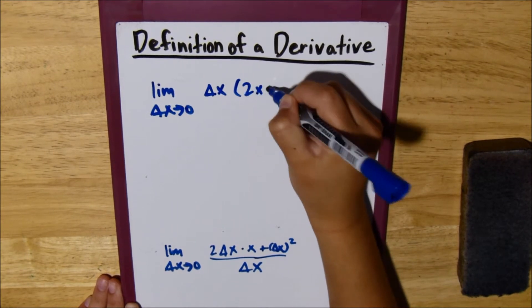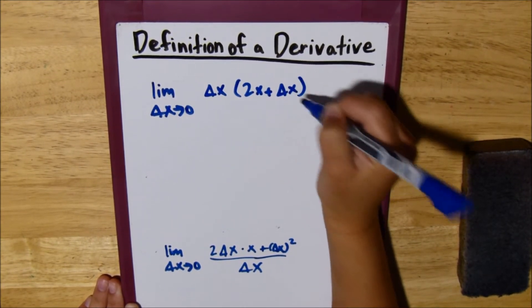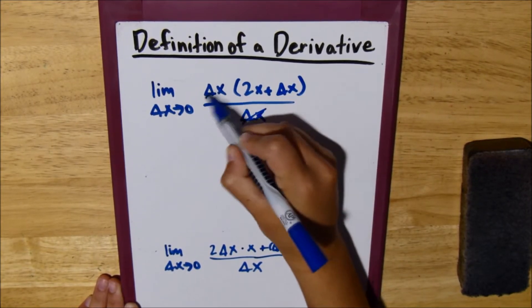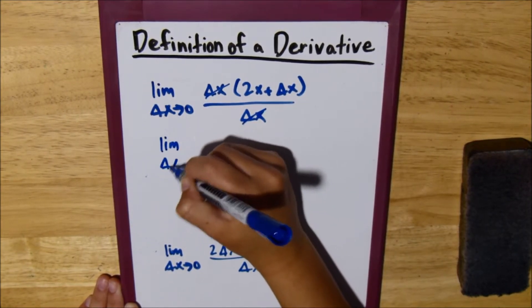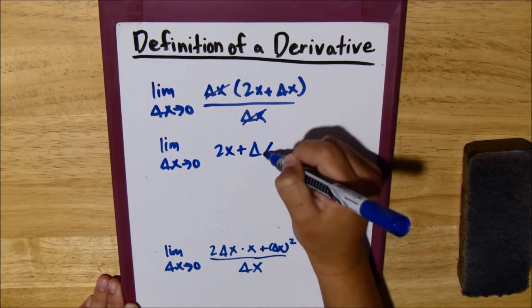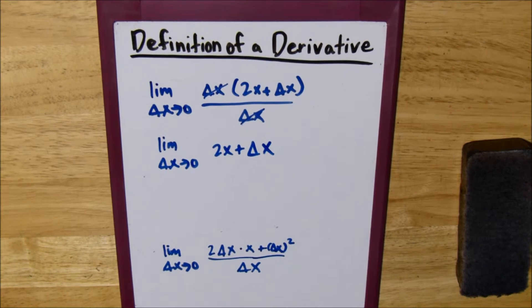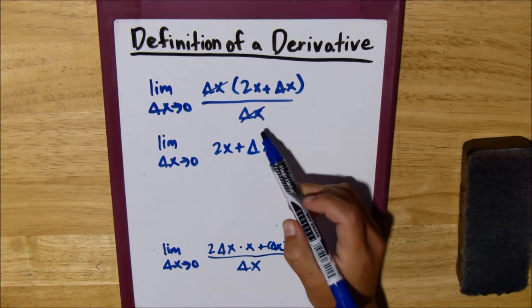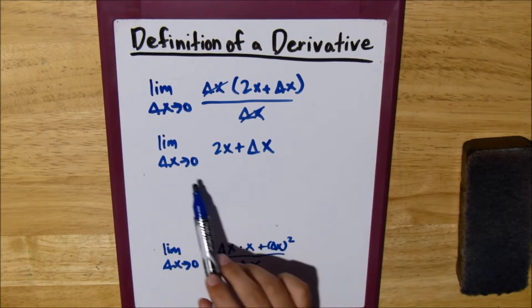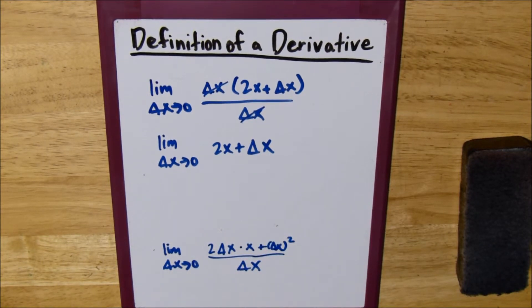So, factor it out, we get 2x plus delta x, all over delta x. These two cancel, and we end up with the limit as delta x equals 0 of 2x plus delta x. Now, you notice here that since we canceled our denominator, we can now simply substitute 0 for delta x, and we get our answer.